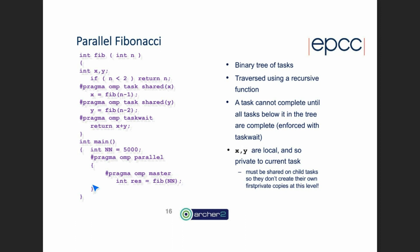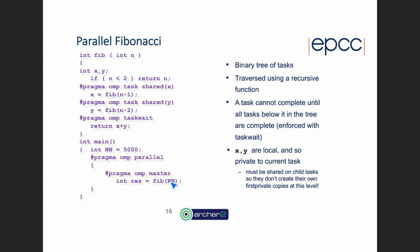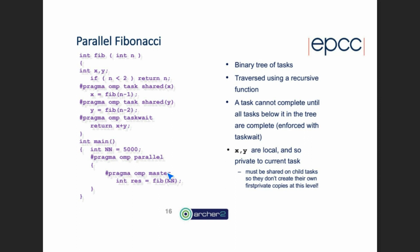At the top level, we use the parallel/master pattern: create a parallel region, make the top-level call to `fib` on thread zero, and let the recursion unwind. It will create two tasks, which get scheduled to different threads, which each create two more tasks, and so on down the tree.